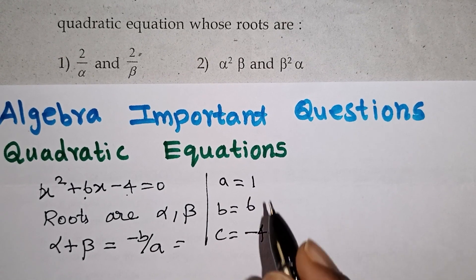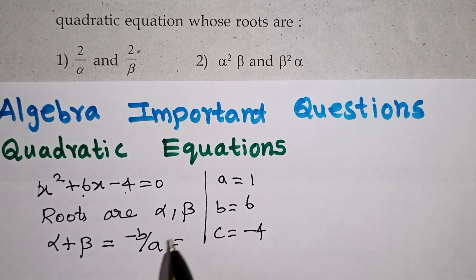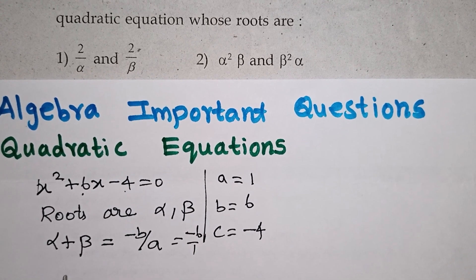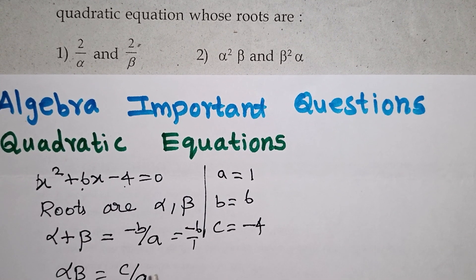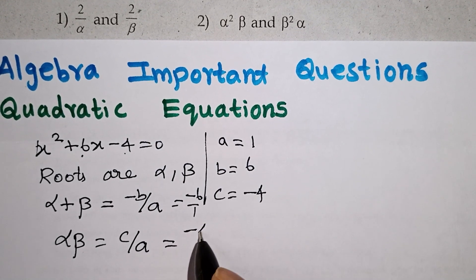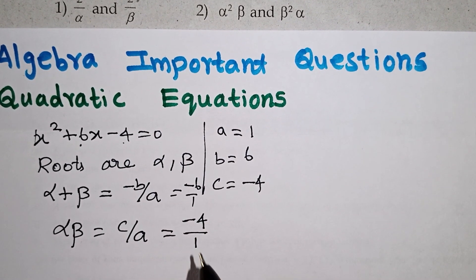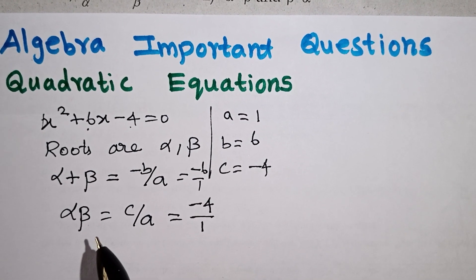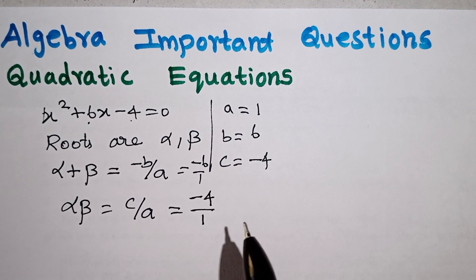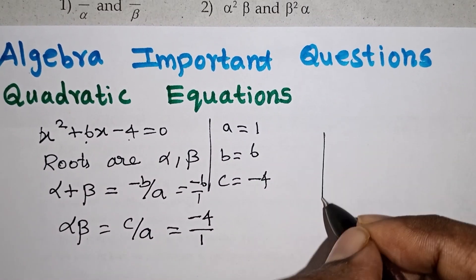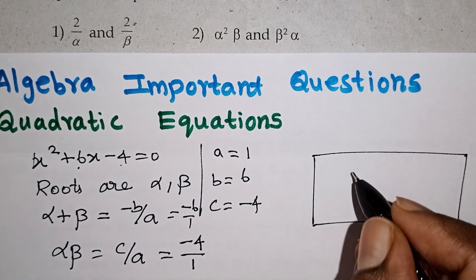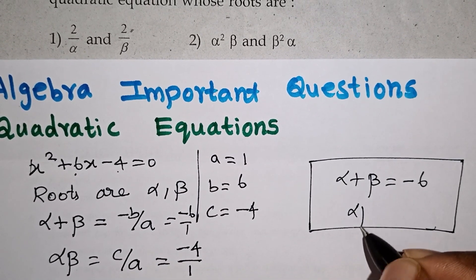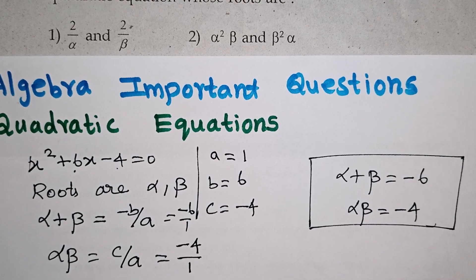The x² coefficient, x coefficient, and constant are a, b, and c respectively. So alpha plus beta equals minus b by a equals minus 6 by 1, which gives us minus 6. And alpha times beta equals c by a equals minus 4 by 1, which gives us minus 4. So alpha plus beta equals minus 6 and alpha times beta equals minus 4.